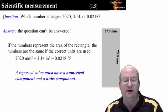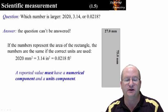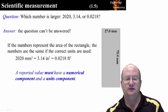If the numbers represent the area of the rectangle and have the units as shown, then the numbers are actually all equivalent. 2020 mm² equals 3.14 in² equals 0.0218 ft².